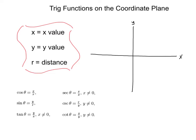Let's dive right into an example. Let's say we had the point (4, 3). I'm going to move from my origin to the right four spaces, then up on the y-axis three spaces, giving me a point right there. I can draw a line from my origin to my point to find the distance. Notice we've got a right triangle, so we can use the Pythagorean theorem and we'll get a distance of 5. Let's go ahead and label our x, y, and r values.